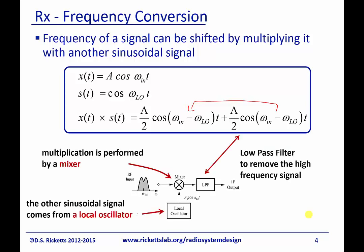The multiplication is performed by a mixer. The oscillator is called a local oscillator, and we're going to use a low-pass filter to remove the high-frequency spectrum that comes out, so that we're left with just the low-frequency component.